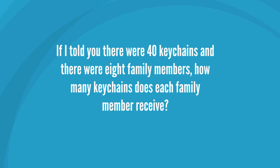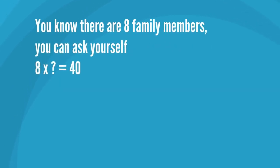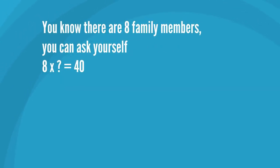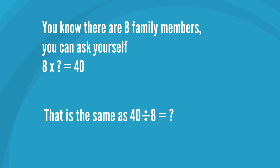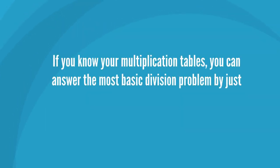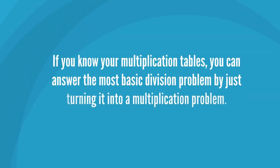If I told you there were 40 keychains and there were 8 family members, how many keychains does each family member receive? You know there are 8 family members. You can ask yourself: 8 times what equals 40? That is the same as 40 divided by 8 equals what? If you know your multiplication tables, you can answer the most basic division problem by just turning it into a multiplication problem.